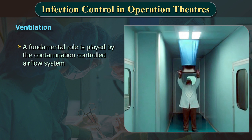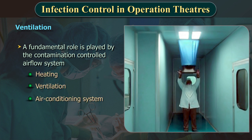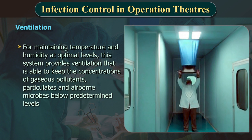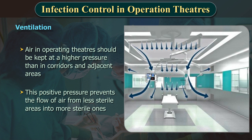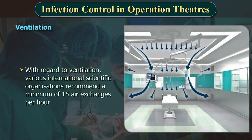A fundamental role is played by the contamination-controlled airflow system, including heating, ventilation and air conditioning systems. In addition to maintaining temperature and humidity at optimal levels, this system provides ventilation that is able to keep the concentrations of gaseous pollutants, particulates and airborne microbes below predetermined levels. The air in operating theatres should be kept at a higher pressure than in corridors and adjacent areas. This positive pressure prevents the flow of air from less sterile areas into more sterile ones. Various international scientific organisations recommend a minimum of 15 air exchanges per hour.